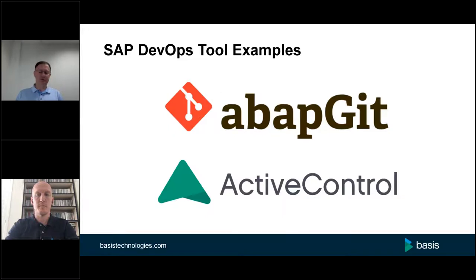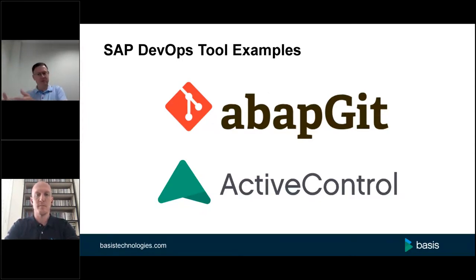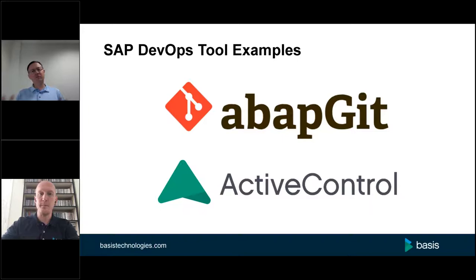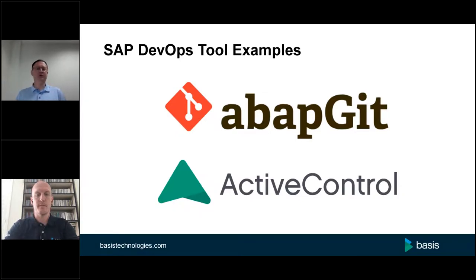The second technology I'll introduce is Active Control — a solution from Basis Technologies. The easiest way to describe it is as a full DevOps stack for SAP: providing everything from backlog management to continuous integration to continuous delivery, all your transport management, all your change control. One of the really cool things about Active Control is it's designed with modern DevOps in mind, so it already has built-in integration points to orchestrate and align the work that colleagues outside SAP are doing alongside the work inside SAP.